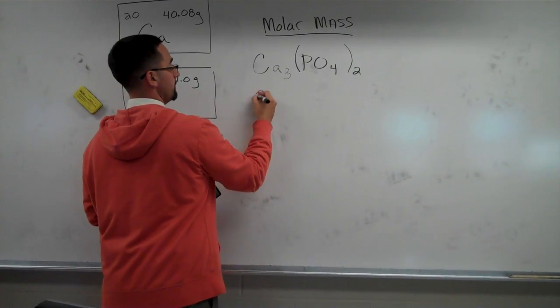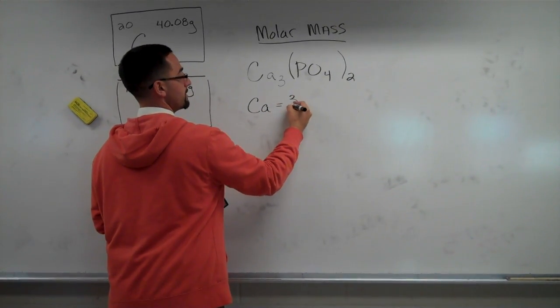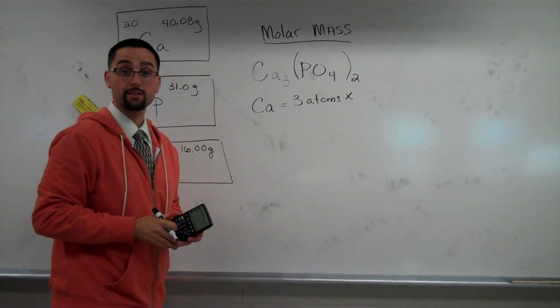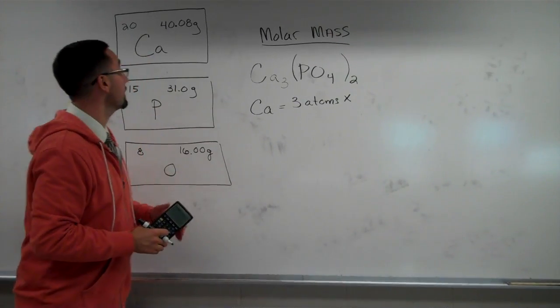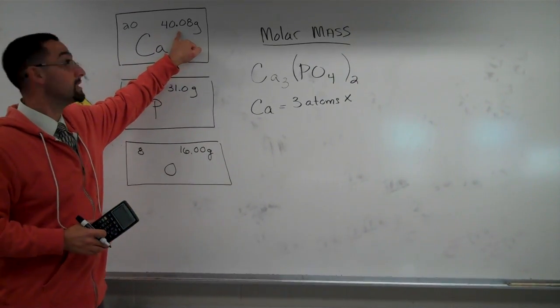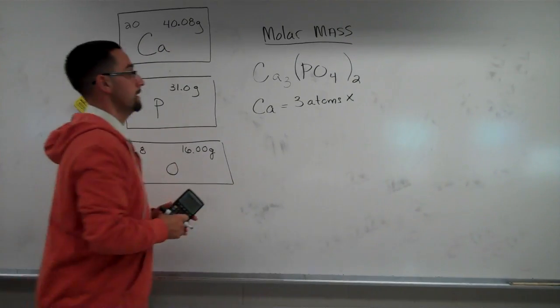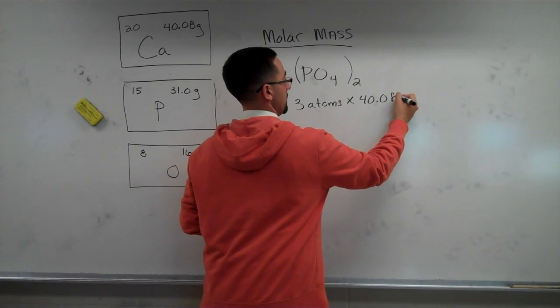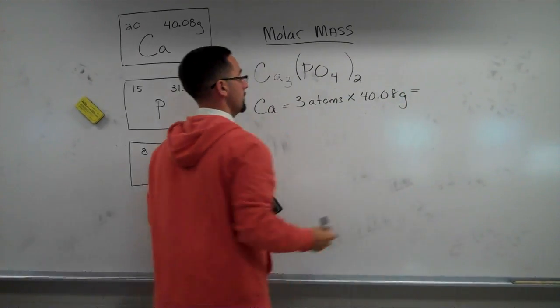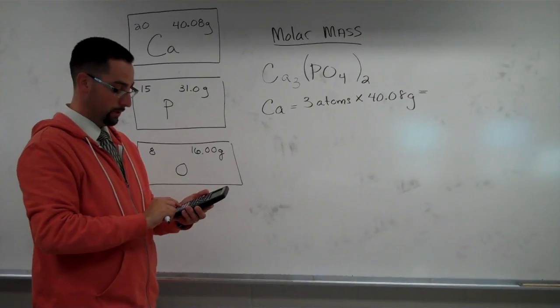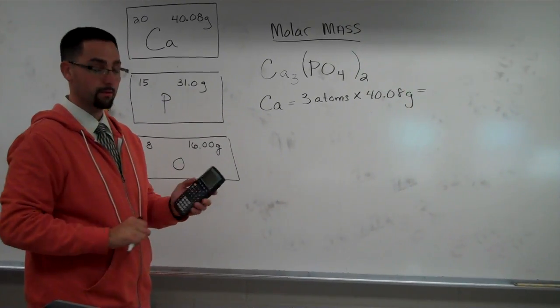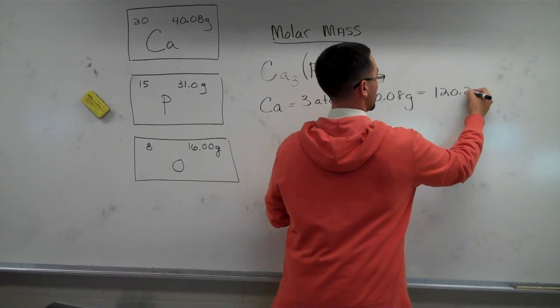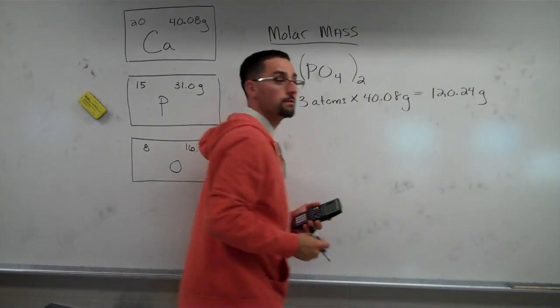So for calcium, that's going to be three calcium atoms times the molar mass of calcium. If you refer to our table, you'll find that each calcium mole weighs 40.08 grams but we have that three times. When we do this out, we have three times 40.08, that's going to contribute 120.24 grams into the compound.